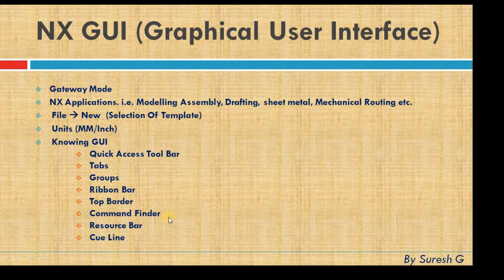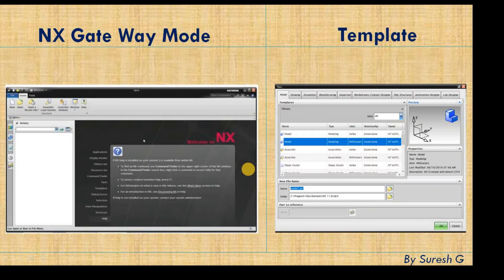The NX GUI — graphical user interface — contains NX gateway, modeling, assembly, drafting, sheet metal, and more. We are going to see how to switch between applications, how to select templates, and learn about the GUI in detail: what is the quick access toolbar, tabs, groups, ribbon bar, top border, command finder, resource bar, and cue line — all in detail with a demo.